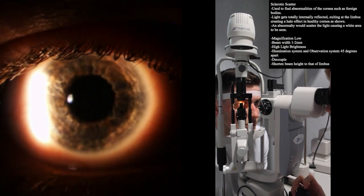If the cornea were to have any abnormalities, they would scatter the light, causing a white area to be seen at its location.